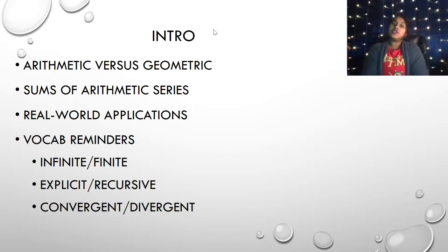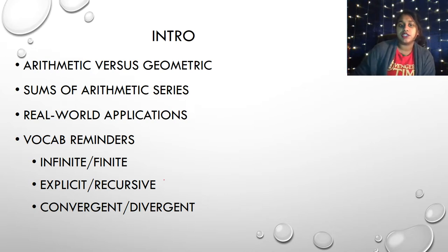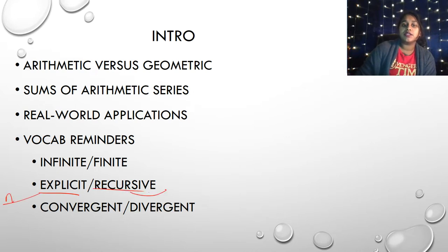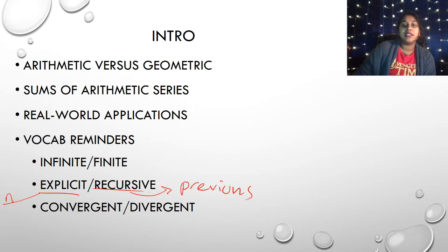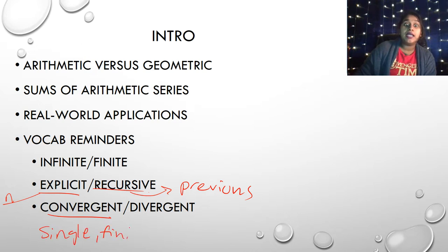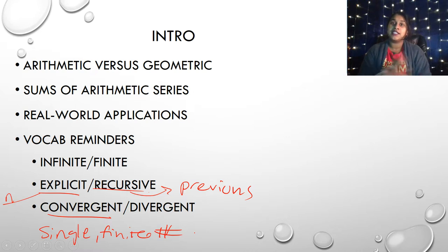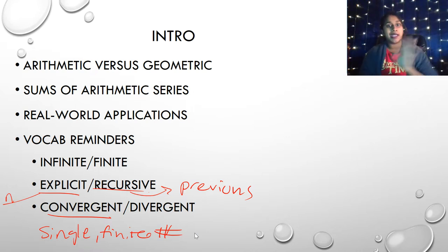We've talked about infinite versus finite, explicit versus recursive, and convergent versus divergent. Remember that an explicit formula lets you find any N without any previous information. A recursive formula requires the previous term. Convergent means we are going to a single finite number — it has to be one number and cannot be infinity.